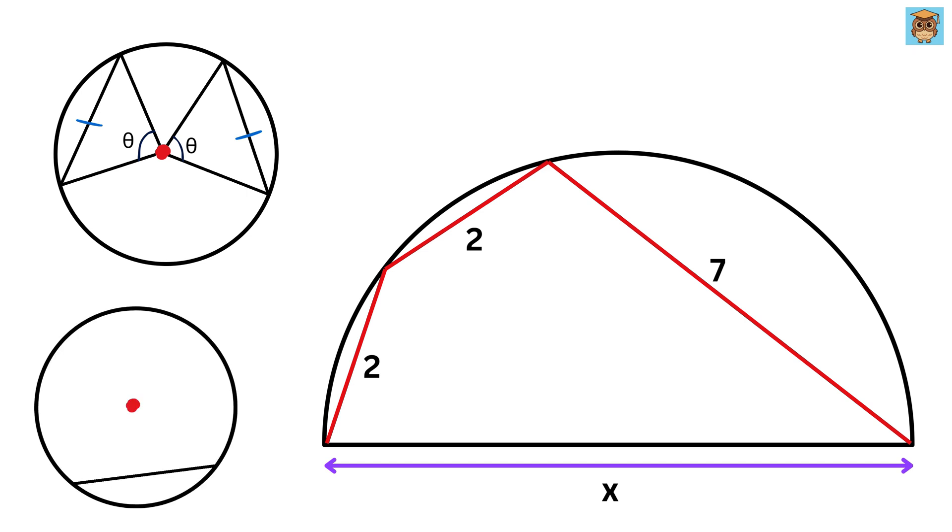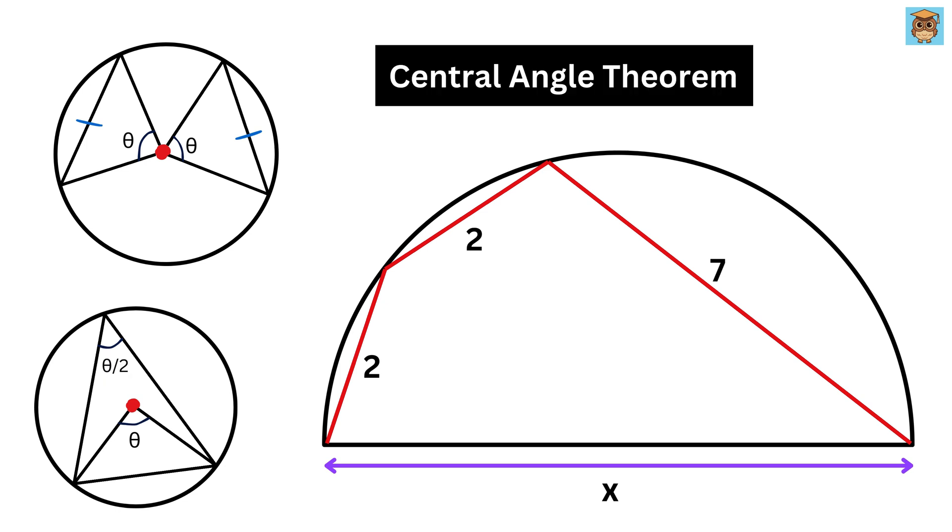Now consider this circle with this as the center. Connect this center with this chord, such that this is some angle Theta. Now, if we take any point on this circle and connect it with this chord like this, then the angle it will make here will be Theta over 2. This is known as central angle theorem.